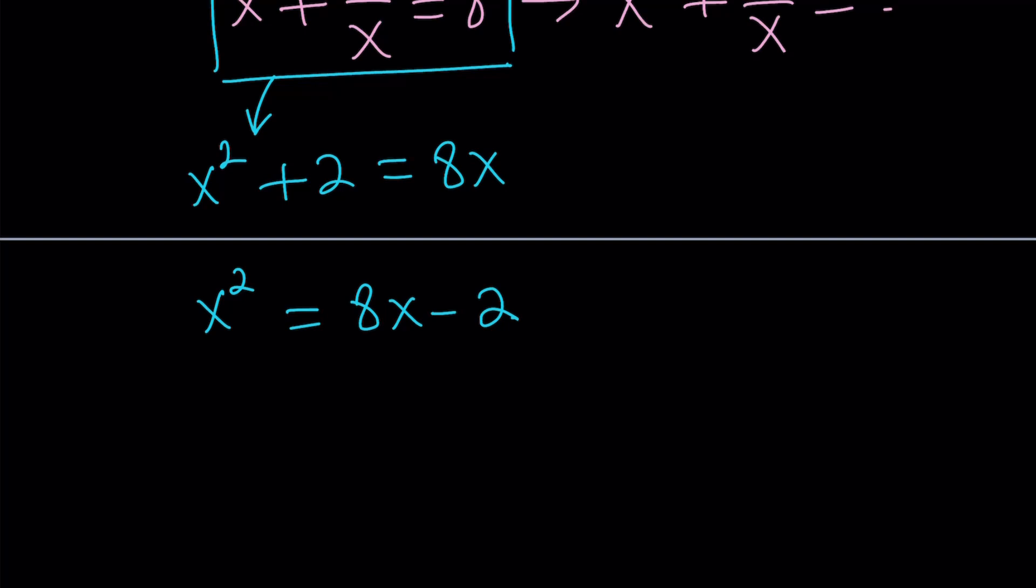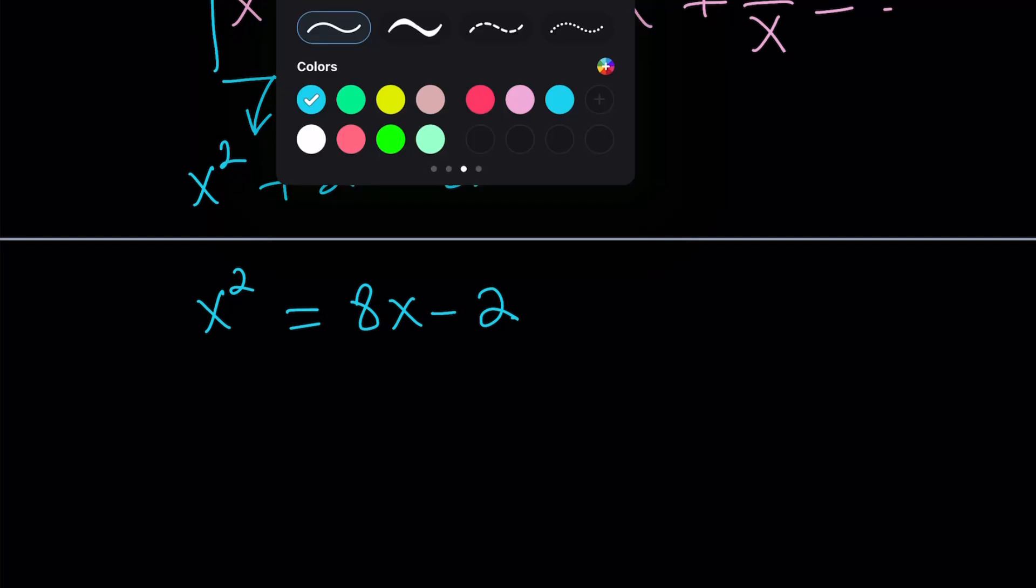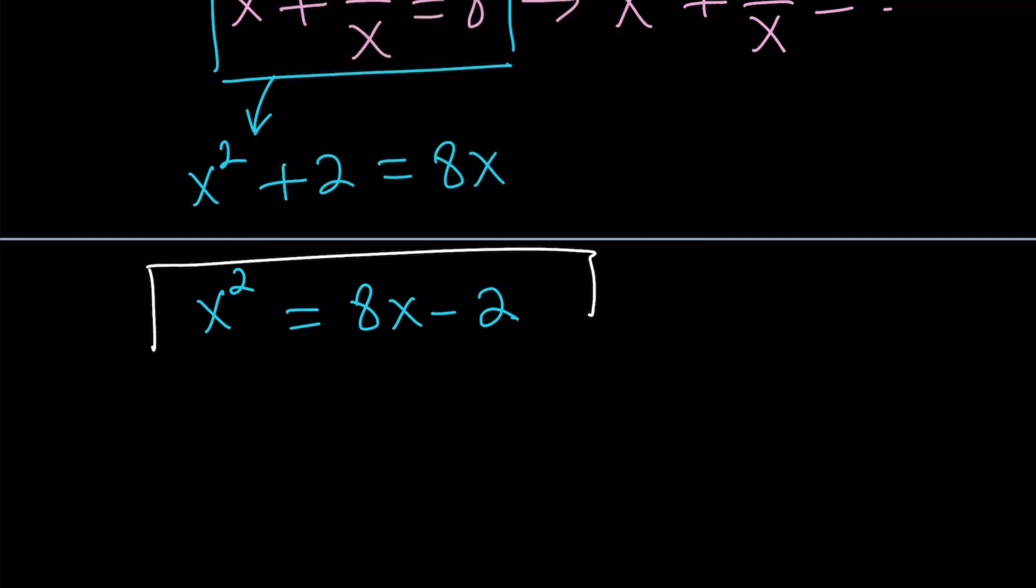So, if x squared can be written as a linear function, then x cubed can be written as a linear function. And then x to the fourth, so on and so forth. It's kind of like a really nice key that opens the door to the solution. Make sense? So, that's the formula we're going to use.